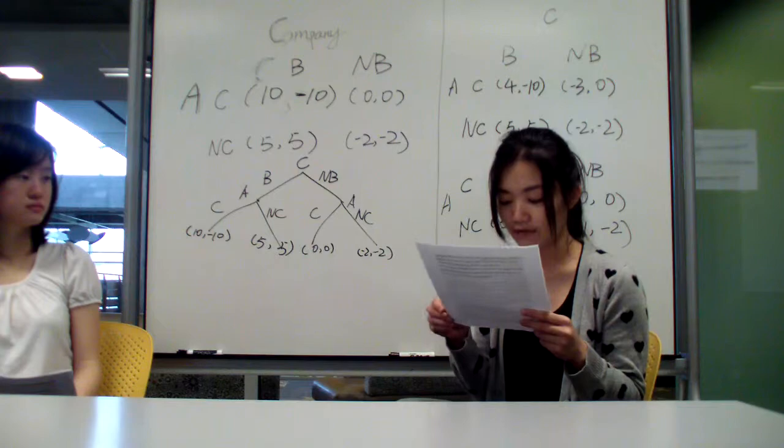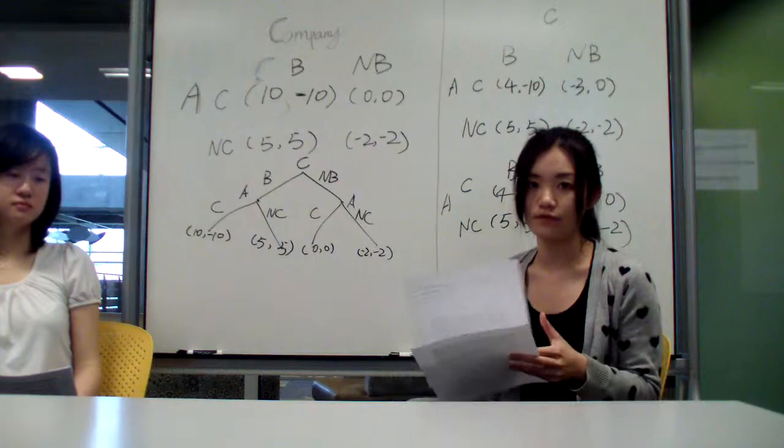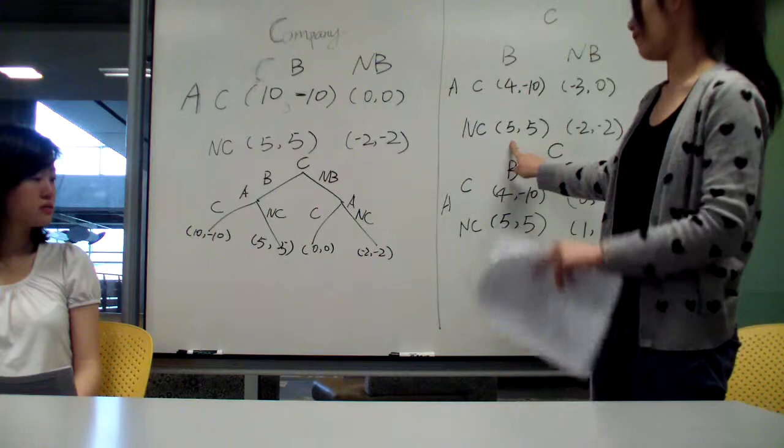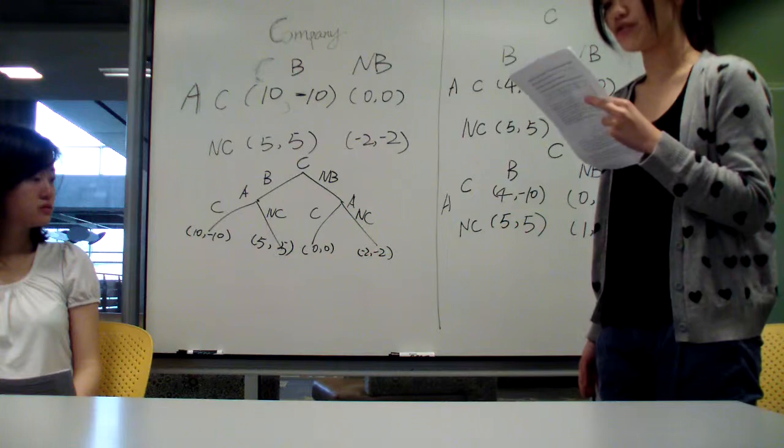To do that, we have to change the payoff of cheating. For example, we change the payoff of the strategy cheat and believe from 10 to 4, less than 5. Then we can see if the company believes that the applicants actually cheat, the payoff will not be better than the case of not cheating.